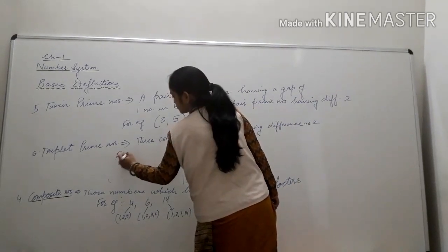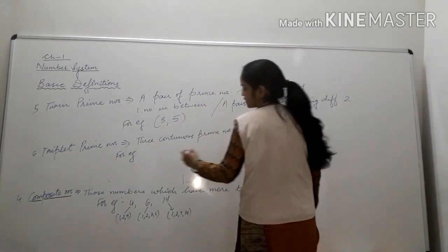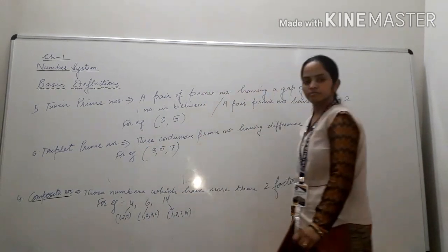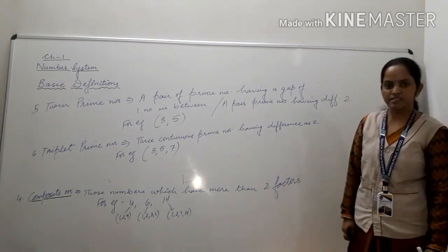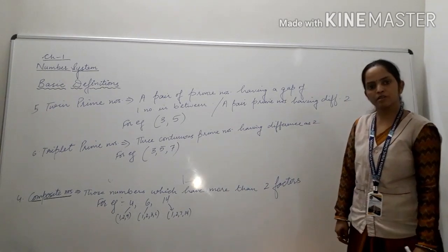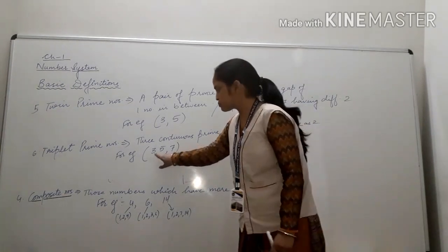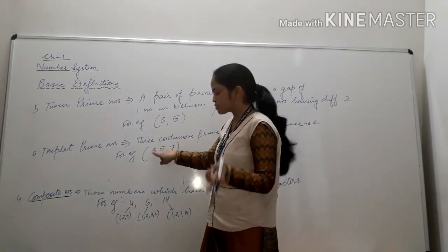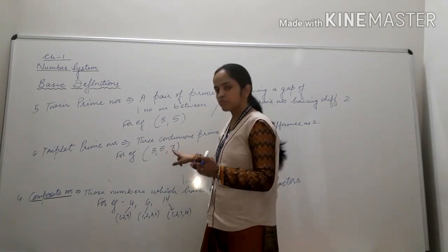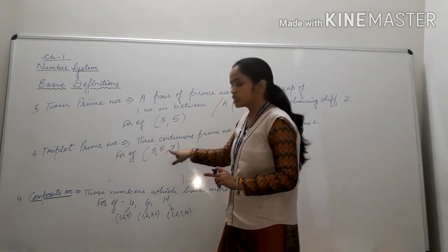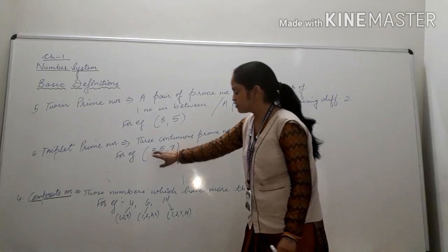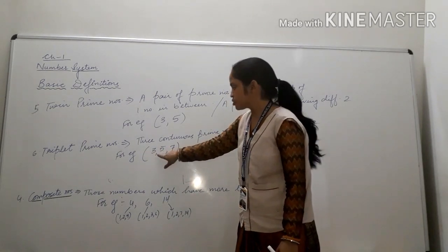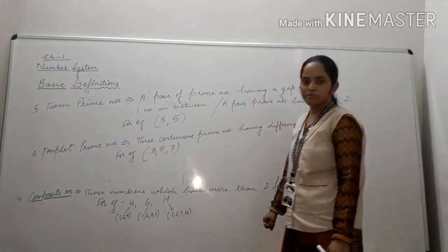For example, can we take 3, 5, and 7 as triplet prime numbers? All three numbers are prime, and they are consecutive prime numbers: after 3 the next prime is 5, after 5 the next prime is 7. Checking the difference: 5 minus 3 is 2, and 7 minus 5 is 2. So these are triplet prime numbers.